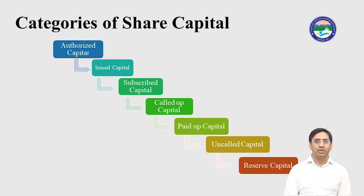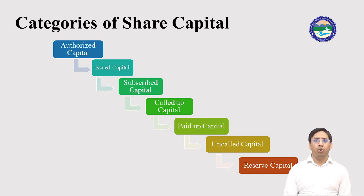So the entire share capital has been divided into different parts. The first is issued capital. Issued capital means that portion of authorized capital which is issued for public subscription. We can collect money with the help of an IPO — Initial Public Offer. With the help of the Initial Public Offer, the company first issues its application to the public. The portion issued in the subscription market is called issued capital, and a person who is interested will subscribe to it.